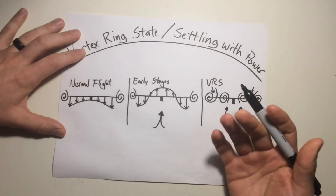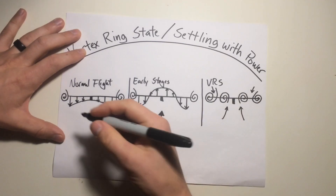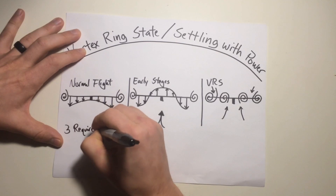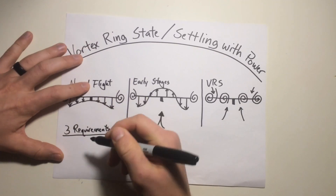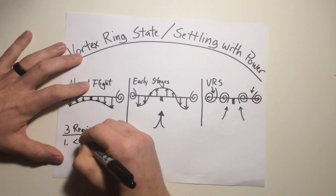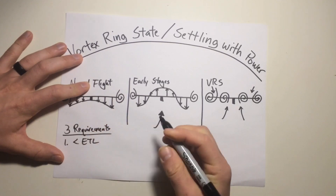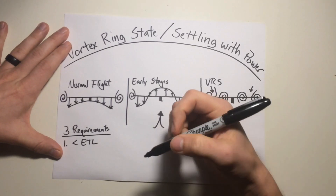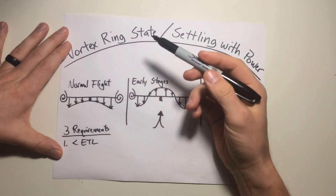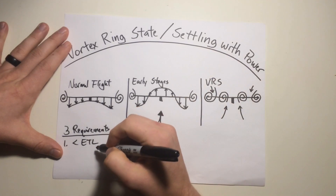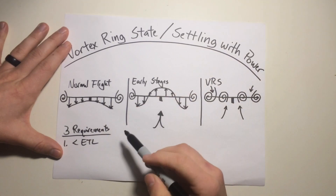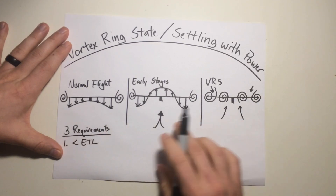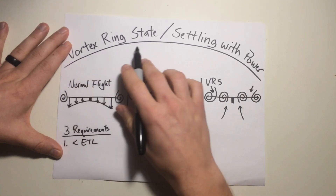What do you have to have to be in a vortex ring state? There are three requirements. Number one is going to be airspeeds less than ETL. We talked about in my other class about airspeeds less than ETL being airspeeds where you're being affected by wingtip vortices. Once you outrun effective translational lift, the aircraft is operating in clean, undisturbed air — it's outrun all of its vortices. So obviously, if you can outrun vortices, you're not going to be in a vortex ring state.